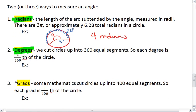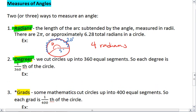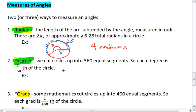All right, let's look at degrees. With degrees, what we essentially do is we take a circle, and we've cut it up into 360 equal segments. So each degree is 1/360th of a circle.